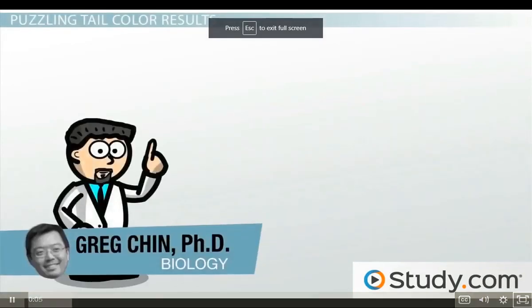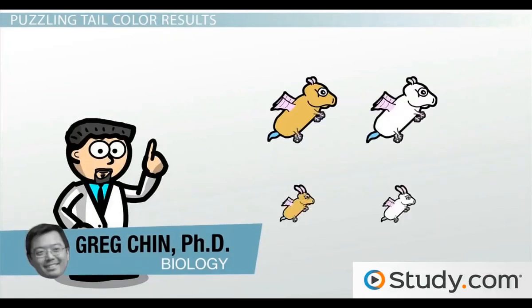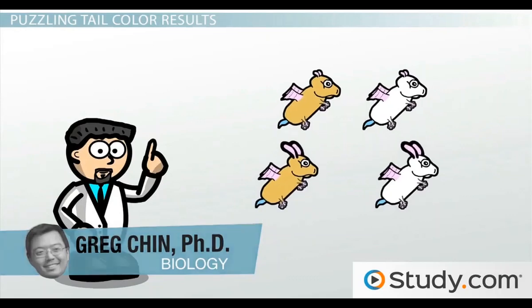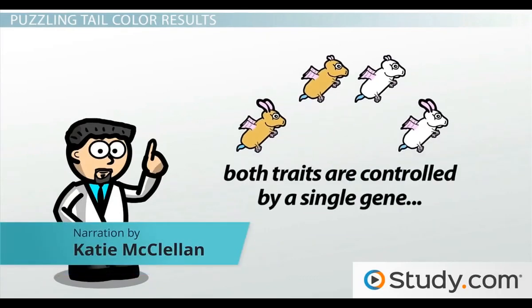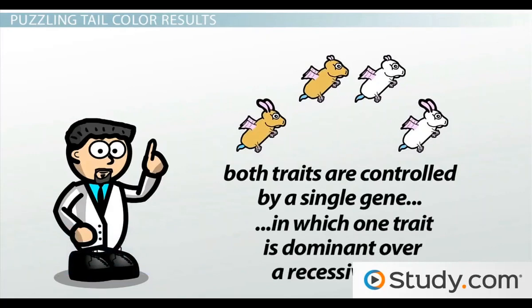Alright, so Adrian is feeling pretty good now. He's already determined the genetic basis of two flying hamster traits, coat color and ear size. And he found that both traits are controlled by a single gene, in which one trait is dominant over a recessive trait.